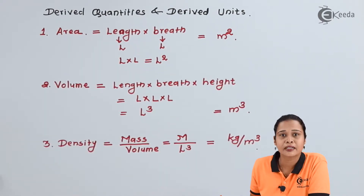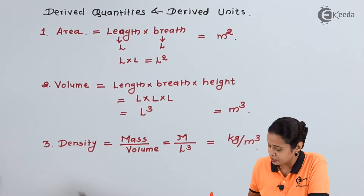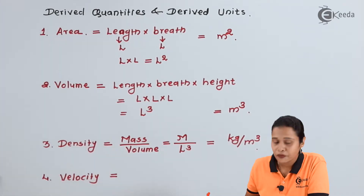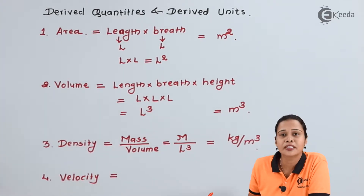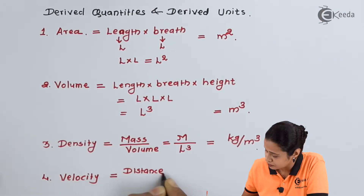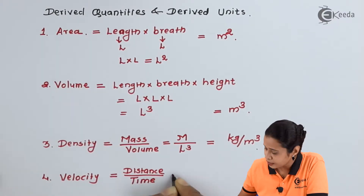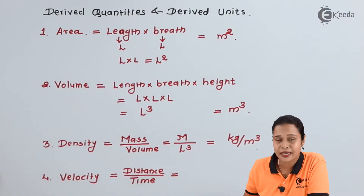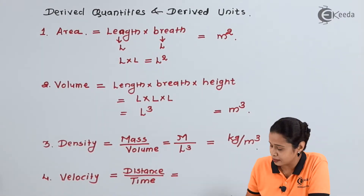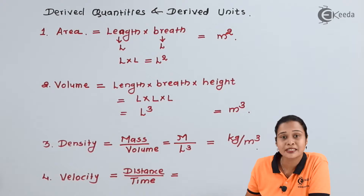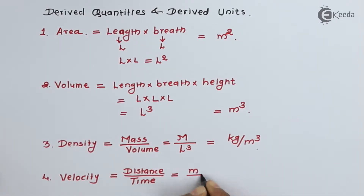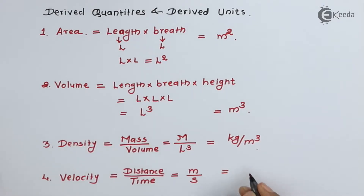The fourth quantity we will take is velocity. We know velocity is distance per unit time. Distance can be expressed in terms of length, so its unit is meter, and time is second. Hence the unit of velocity is meter per second.